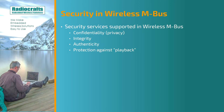But first, what is security? In Wireless MBUS we consider these elements of security: Confidentiality, or privacy, which means that nobody can listen in. Integrity, that the message was not changed. Authentication, to be sure that the message actually comes from the device it is supposed to come from. And finally, protection against playback, so that you cannot record a message and play it back later.